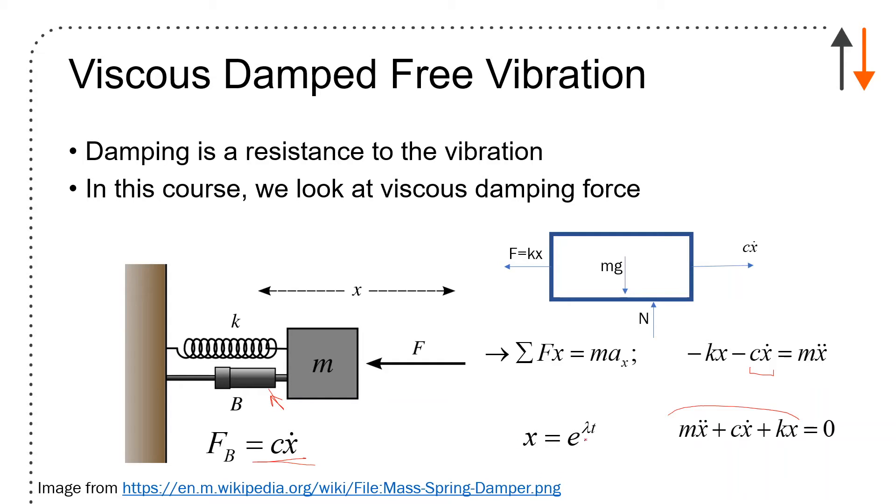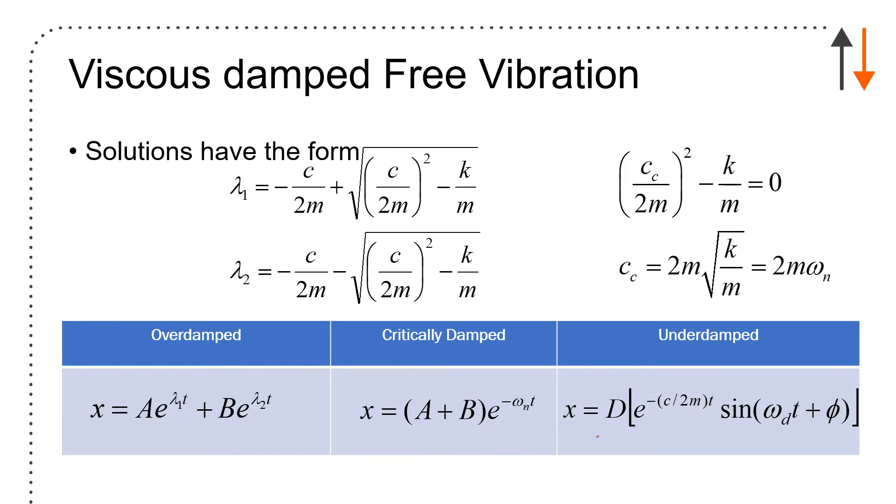The solution form is x = e^(lambda*t). You end up with forms where lambda_1, lambda_2 = -c/(2m) ± √((c/(2m))² - k/m). You look at the term under the square root. If it equals zero, then it becomes critical damping: c_c = 2m√(k/m) = 2m*omega_n.